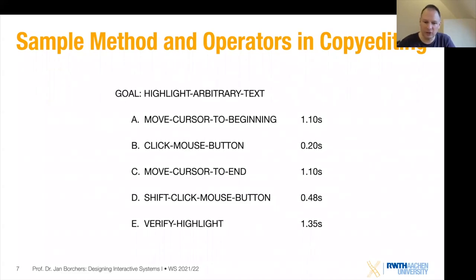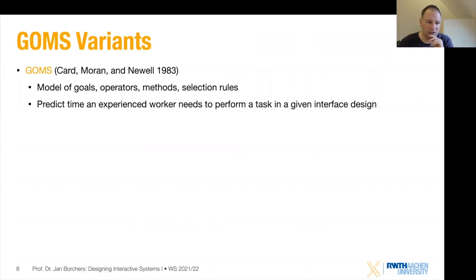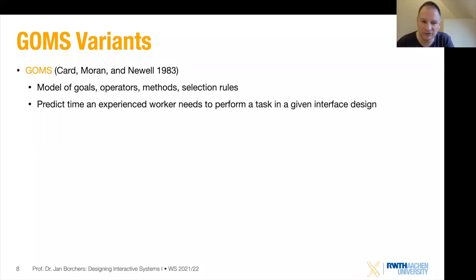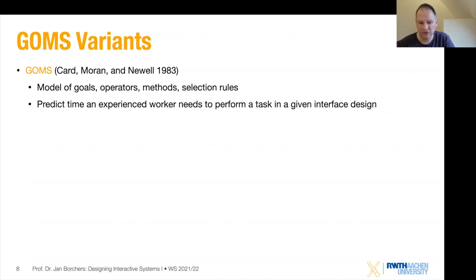There are a couple of variants of the GOMS model. The first — the original one that Card, Moran, and Newell proposed — predicts the time that an experienced worker needs to perform a task in a given interface design. Notice that we don't need the interface to be implemented. If we know what the interface is supposed to look like, we can do this without building a prototype. That is the strong point of GOMS.